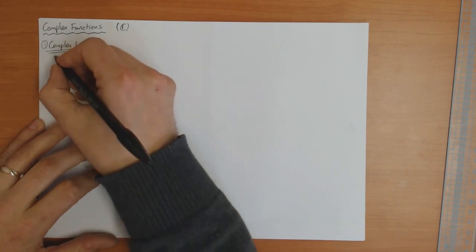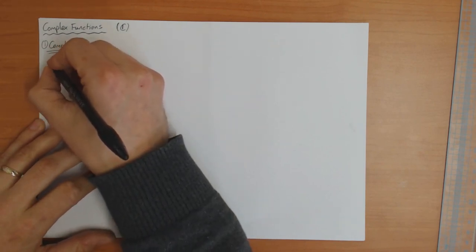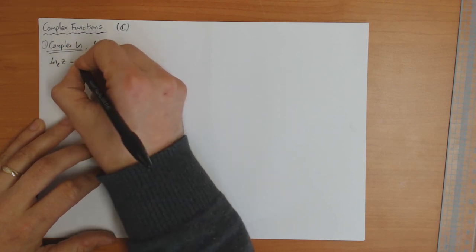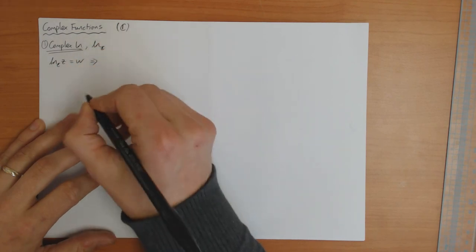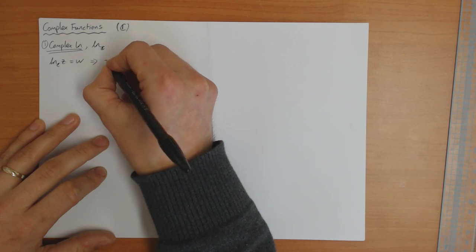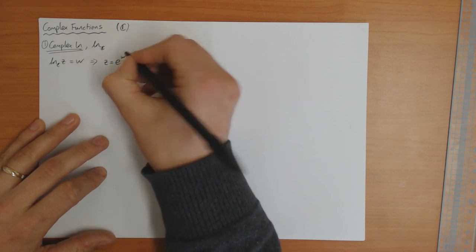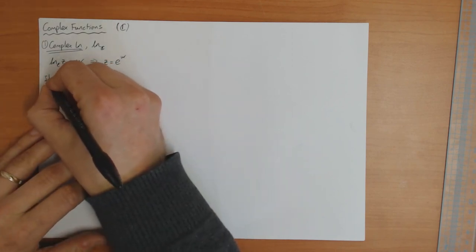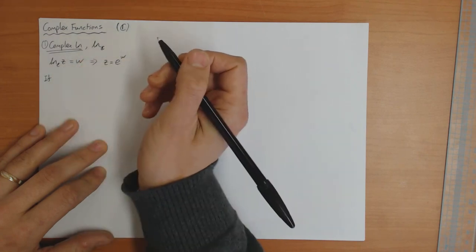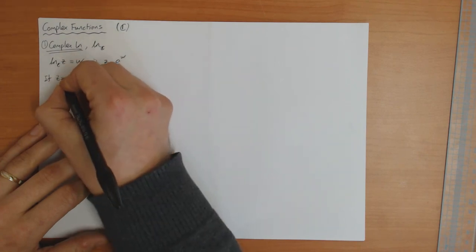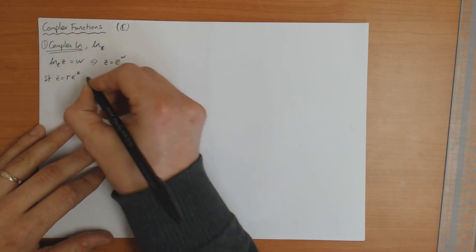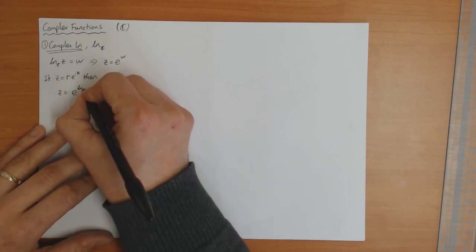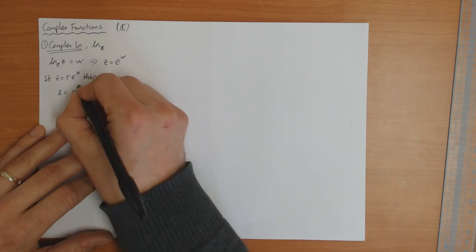So it should be defined as the inverse function. This means if we want to compute log z, where z is some complex number, let's suppose this is equal to w. If this is true, then this is the same as saying that z should be equal to e to the w. Now if z is in exponential form r·e^(iθ), then you can see that z is equal to e^(log r + iθ).